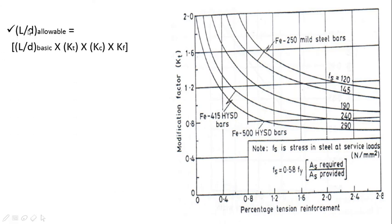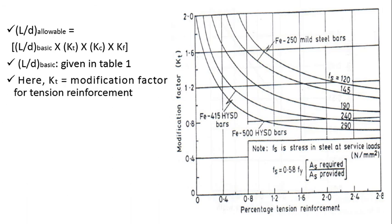Then we can say that (L/D)_allowable is nothing but (L/D)_basic × KT × KC × KF. Let us see what these three factors are. (L/D)_basic is already given in table 1 we have seen. Here KT is nothing but the modification factor for tension reinforcement. And here clearly we can see this graph - the x-axis is percentage tension reinforcement (pt%), whereas y-axis is the modification factor KT.